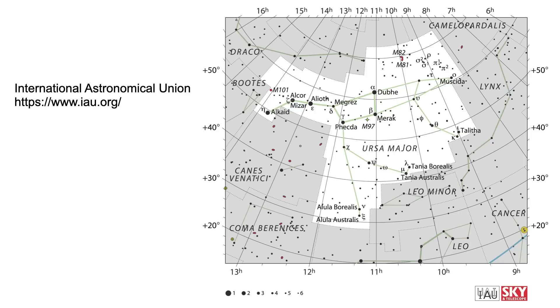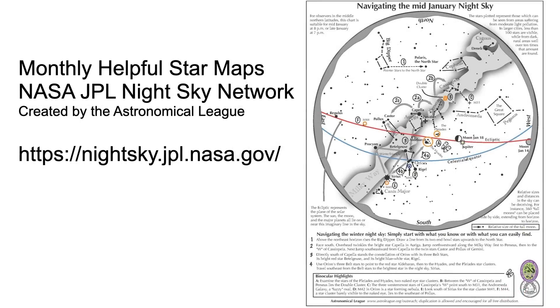Speaking of which, what are some free resources that you can use to have star charts so you can go outside and look for things in the sky? Well, a good place to start are the monthly maps that are provided by NASA's Jet Propulsion Laboratory through their Night Sky Network. These maps are created by the Astronomical League, and you can go get them at this website that's shown here.